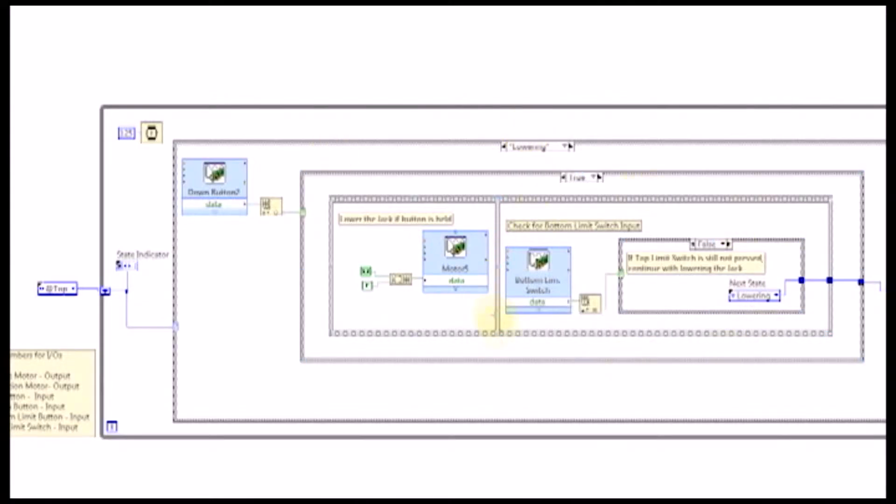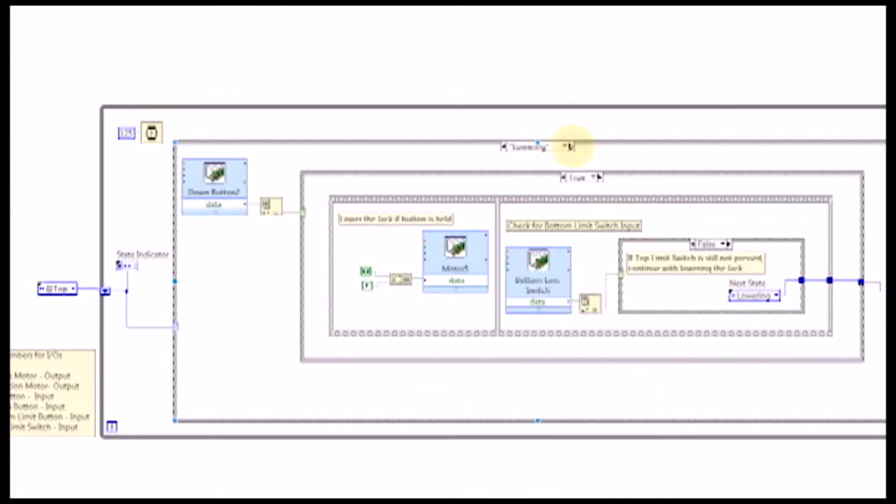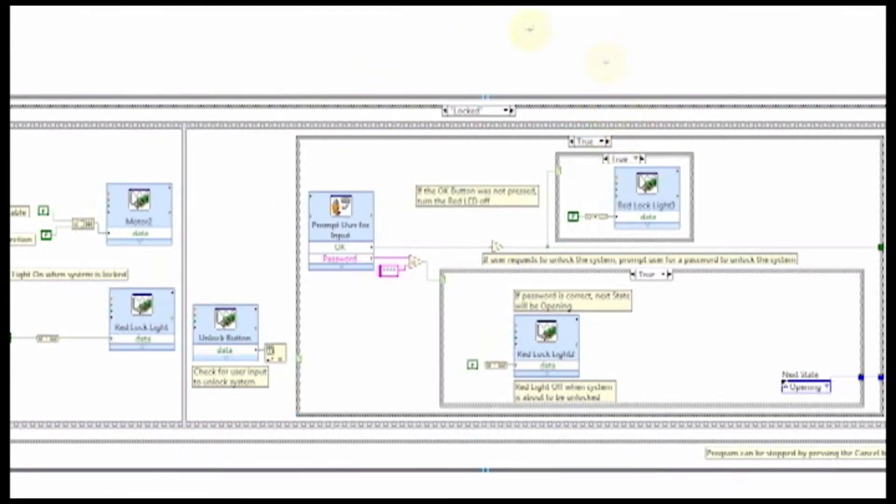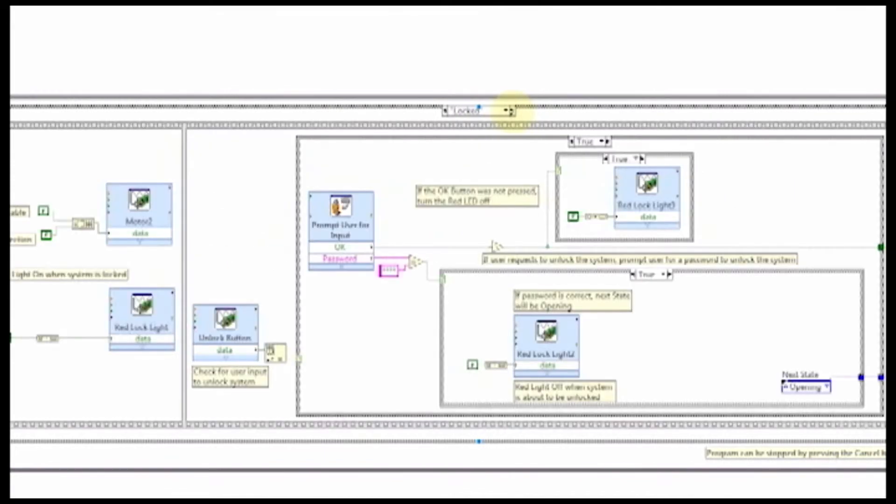Now let's take a look at how the models are programmed to operate. As we mentioned earlier, we're using LabVIEW to code and control the models. As you can see in the VIs, there's the code itself and also a legend for all the input and output port numbers for that specific model. The programs for the remaining models use basic state machines in which states change based on the user input.